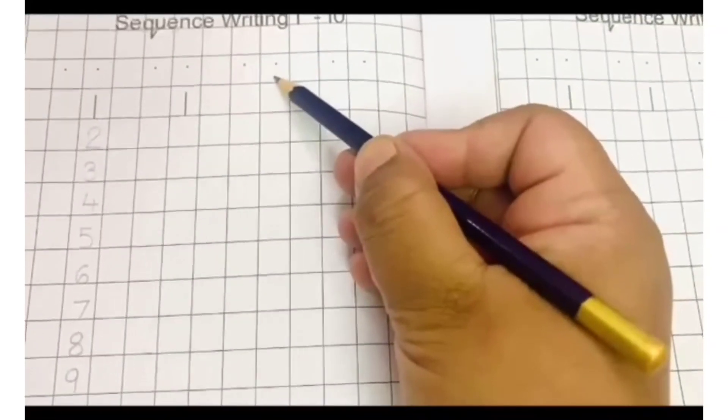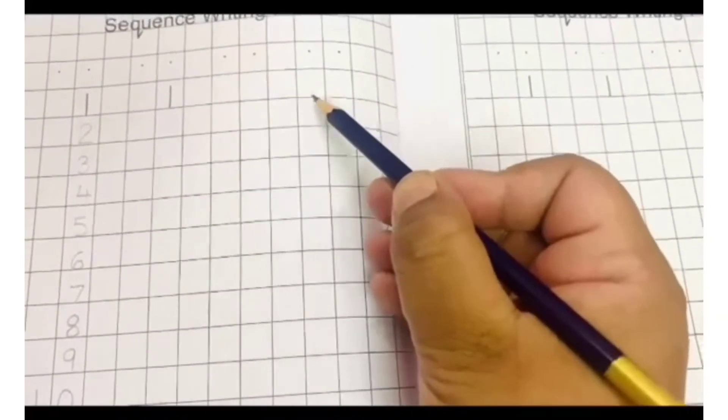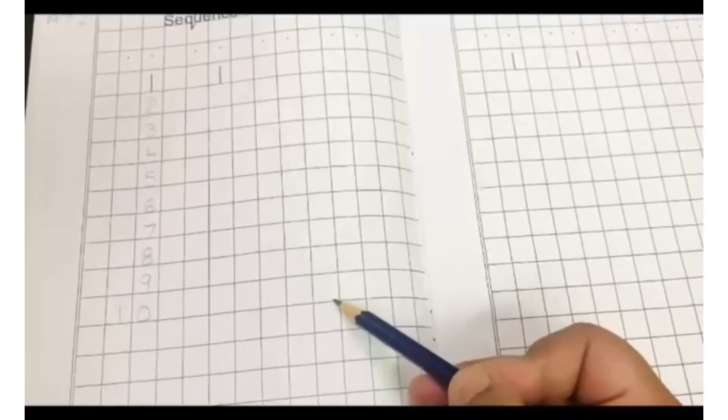When it is a single digit number, you will write under the right dot. But when it becomes two digit number, like 10, then 1 comes under the left dot and 0 comes under the right dot. Numbers should touch the bottom line. Do your work neatly and send the work to your class teacher.